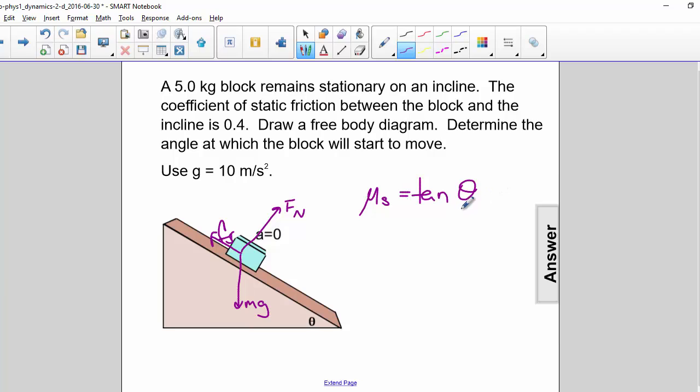Now in order to solve for theta, we need to take the inverse tangent. So theta is equal to the inverse tangent of mu. So theta is equal to the inverse tangent of 0.4. That makes theta equal to 22 degrees.